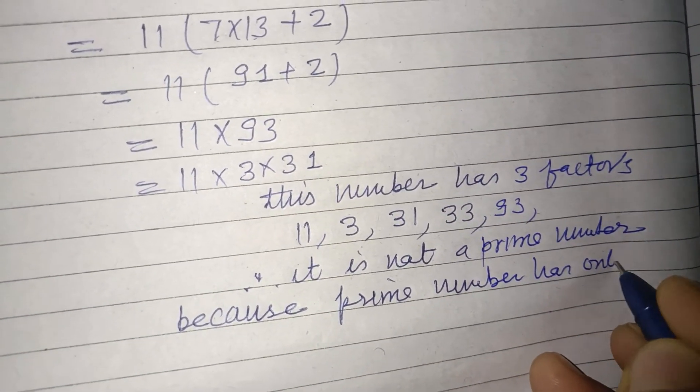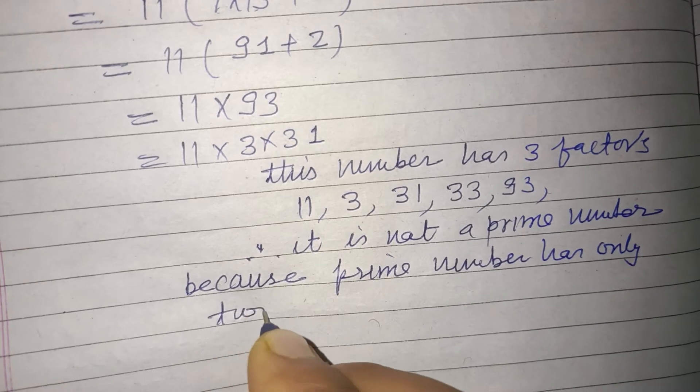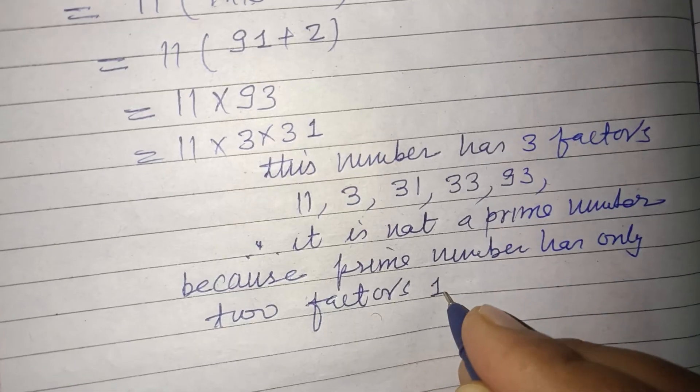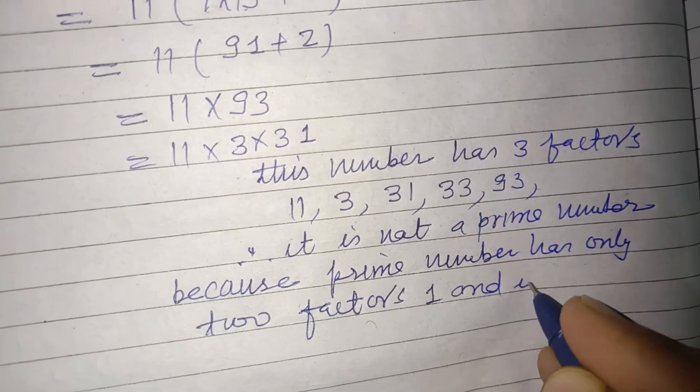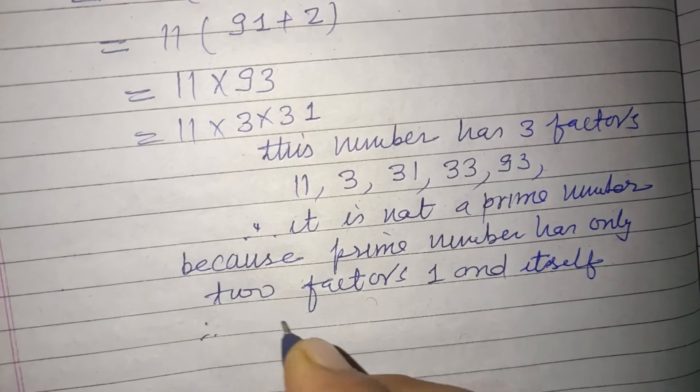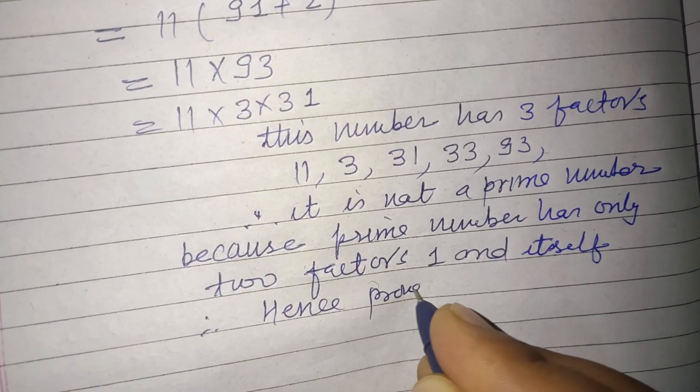A number has only two factors - what are they? One and itself. Therefore, hence proved that the given number is not a prime number.